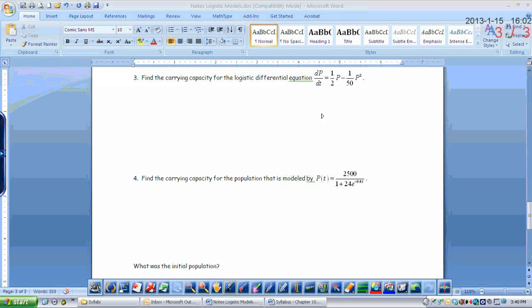So on this one, we're given the differential equation. Well, if you're given the differential equation, then it has to be in that form that I gave you on the first page of this notes of dp/dt equals little kp times 1 minus p over big K. And when it's in this form right here, then your carrying capacity is this big K right here. But the differential equation that we were given is not in that form.